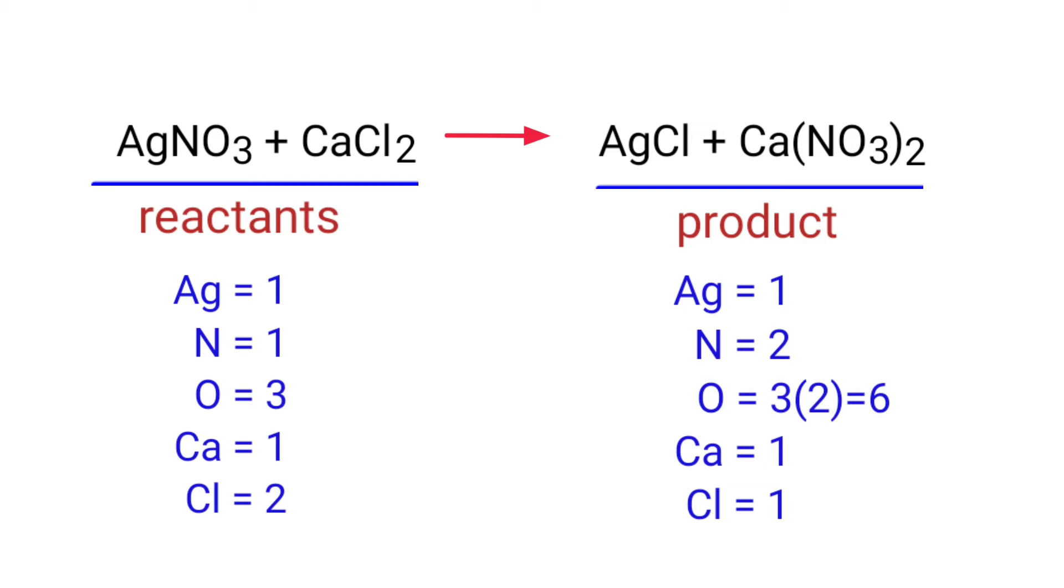To balance the chemical equation we need to make use of coefficients. A coefficient is a number that we place in front of a chemical formula.